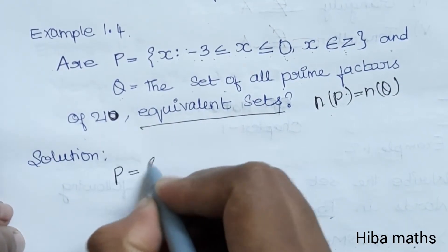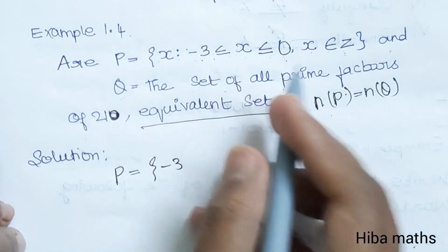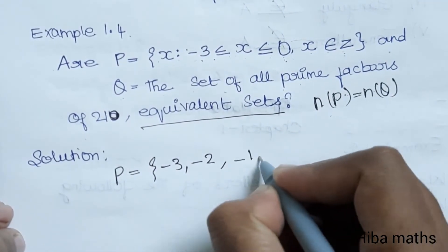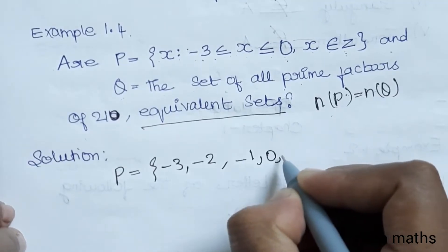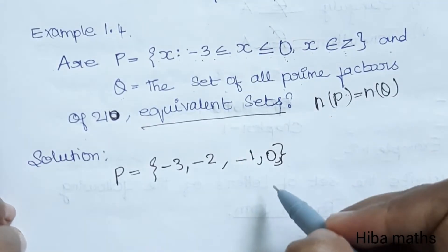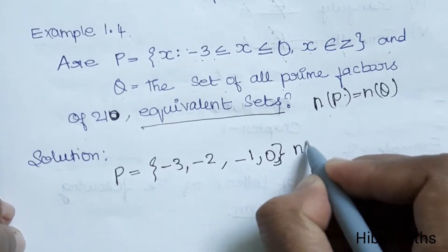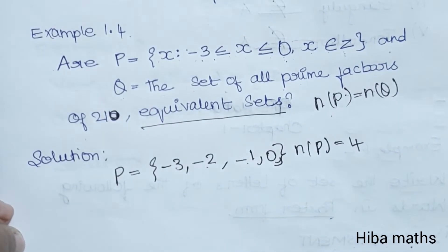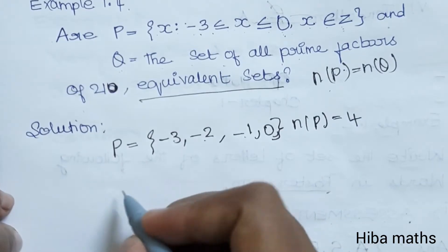First, P's values: from -3 to 0, we have -3, -2, -1, 0. So n(P) equals 1, 2, 3, 4 elements.